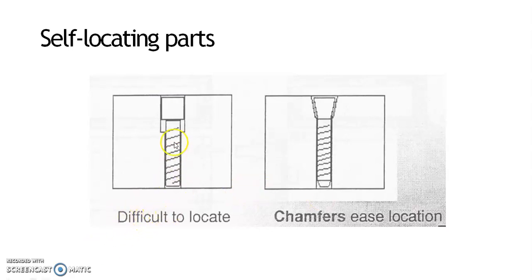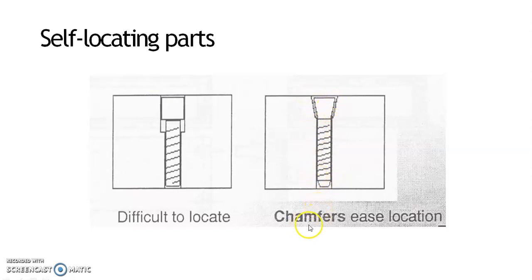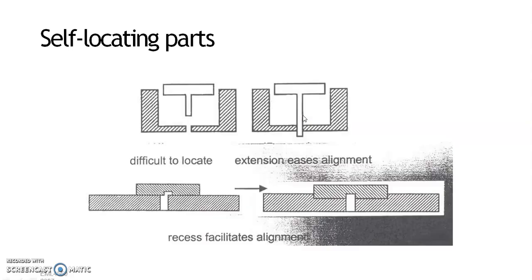Looking at the figure, consider a hole to be produced through a plate. In this particular case, it is difficult to locate. However, when we provide chamfers on that part, the chamfer aids location. This demonstrates the principle of self-locating parts implemented for this example.